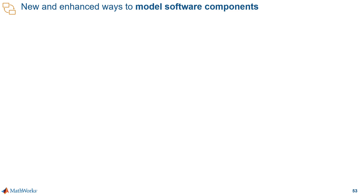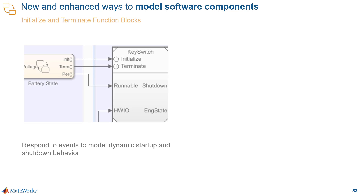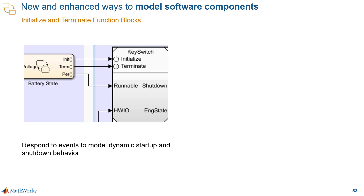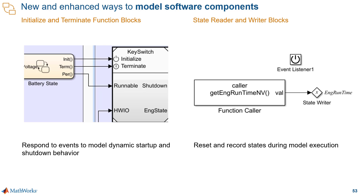Another example of new and better ways to model software components are initialize, reset, and terminate functions and state reader and writer blocks. These are all important because they enable new modeling workflows. For instance, you can model functions that embedded systems use to start up and shut down, and you can customize and aggregate these functions in the generated code. With the state reader and writer blocks, you simplify state setting and reading in response to initialize and terminate events. These are all important behaviors for development of electronic control units or ECUs.